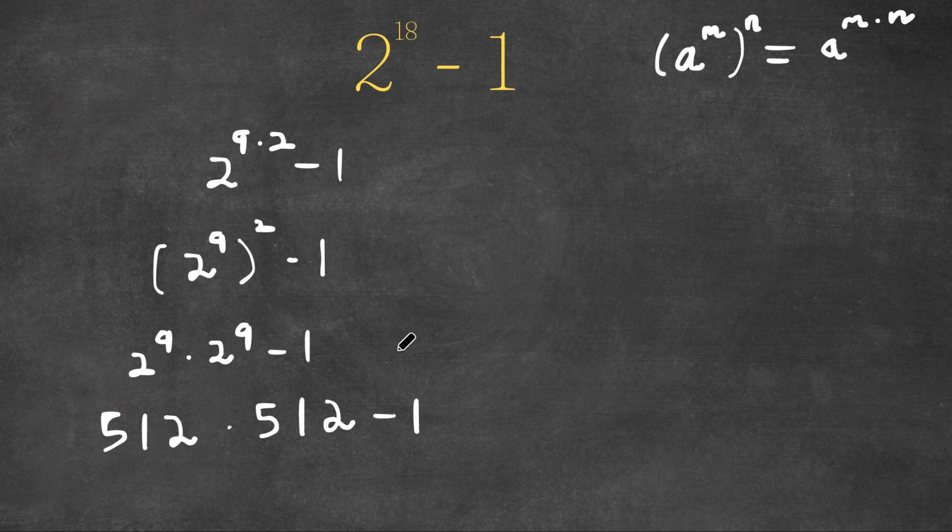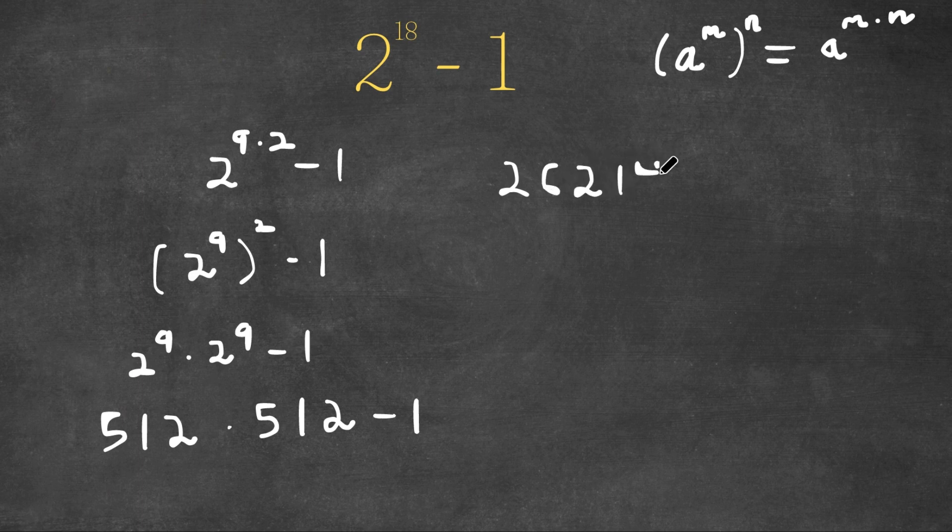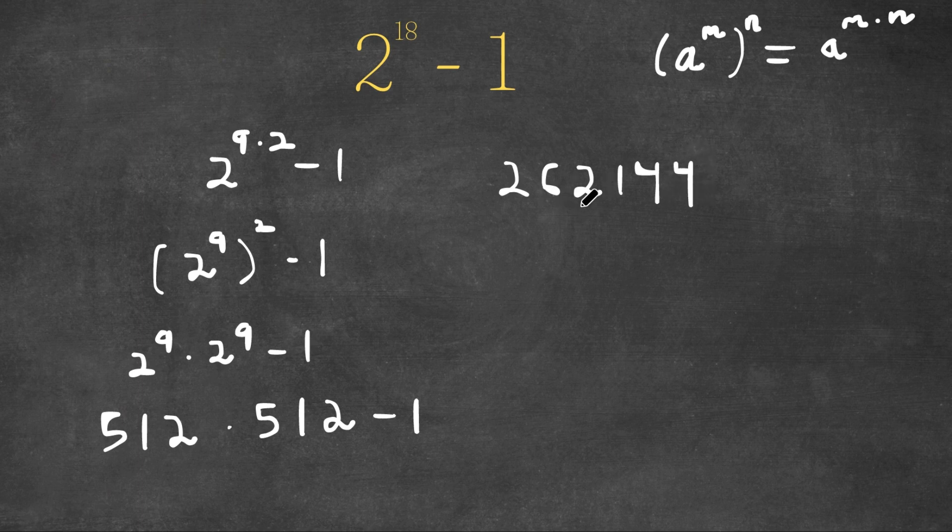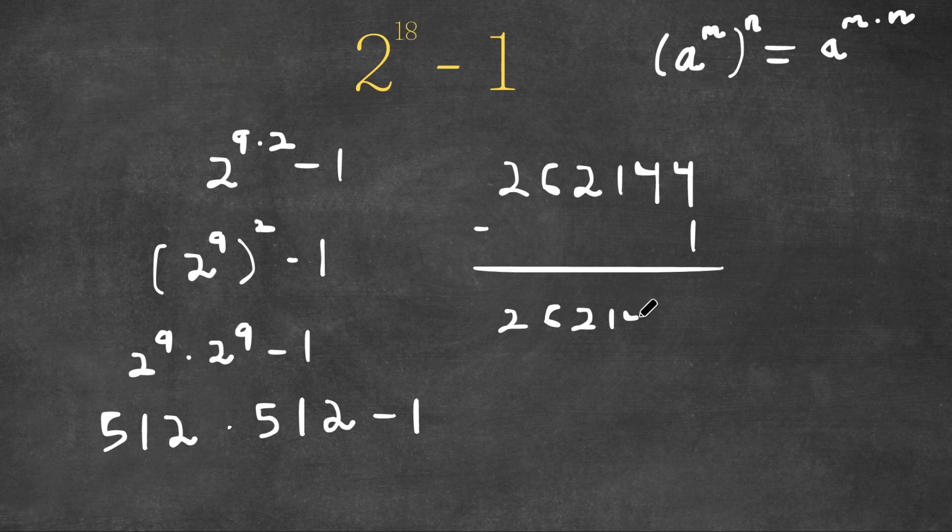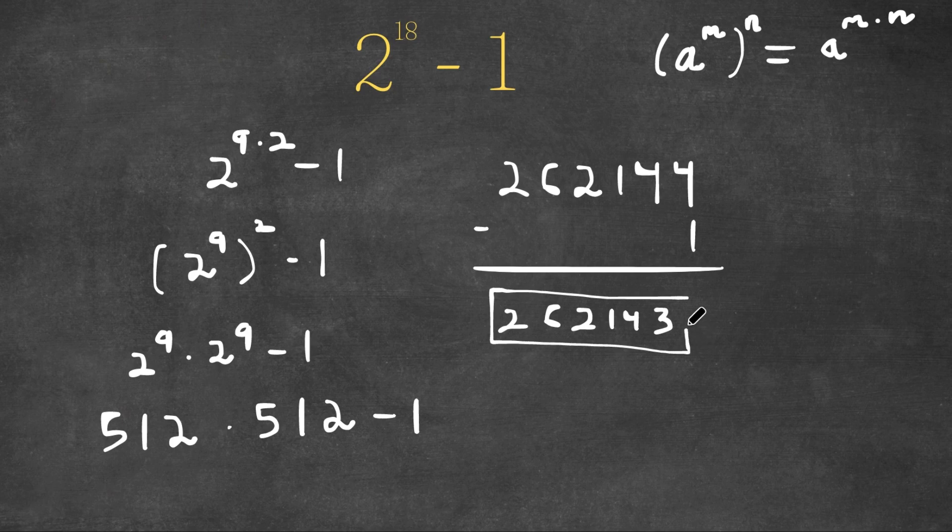Now 512 times 512, this is equal to 262,144. And now with our minus 1, we simply subtract 1. So now this would be 262,143. So this is our answer.